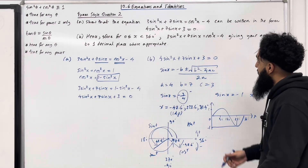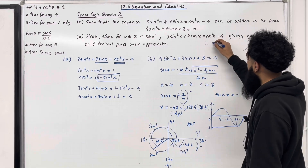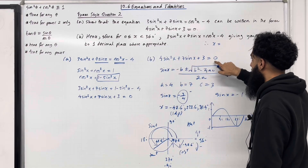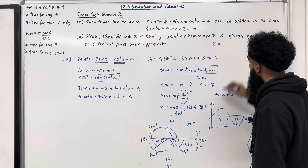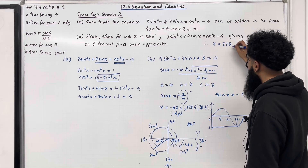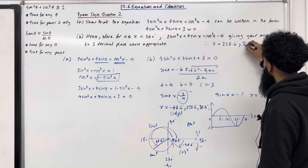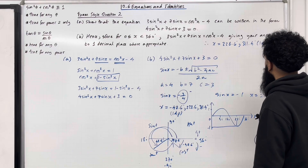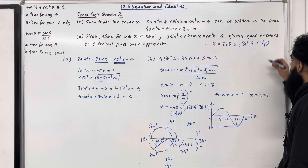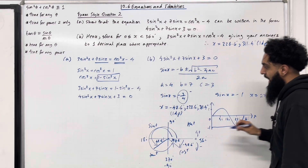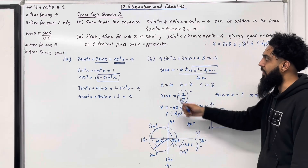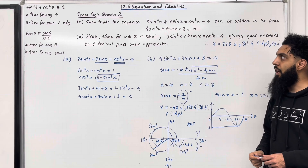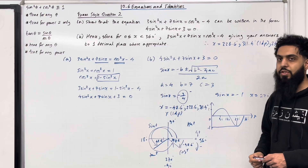Therefore, the complete solutions for x are 228.6°, 311.4° (both to one decimal place), and 270°. We neglect −48.6° because it falls outside the interval. This completes exam style question 2 and this teaching video on 10.6 Equations and Identities.